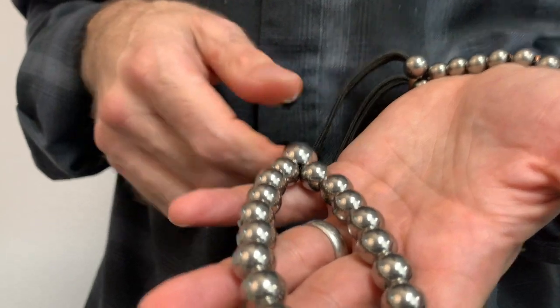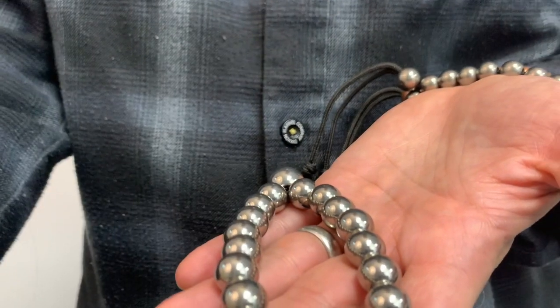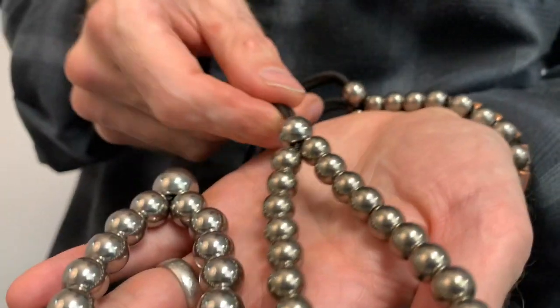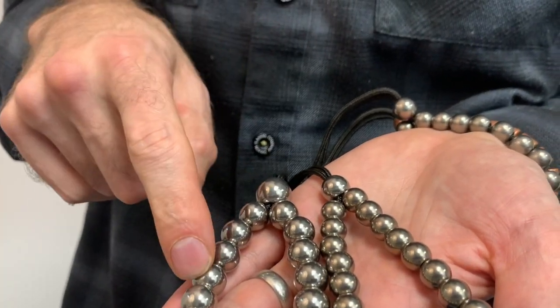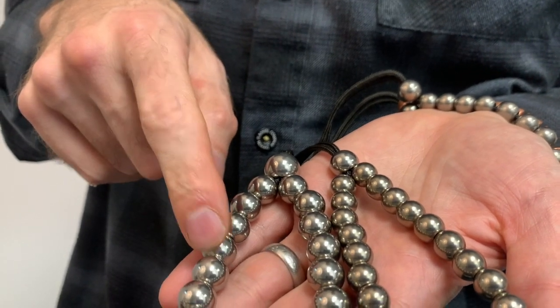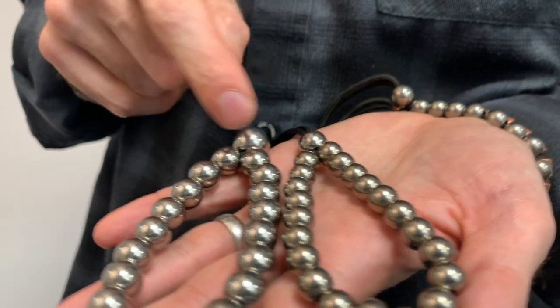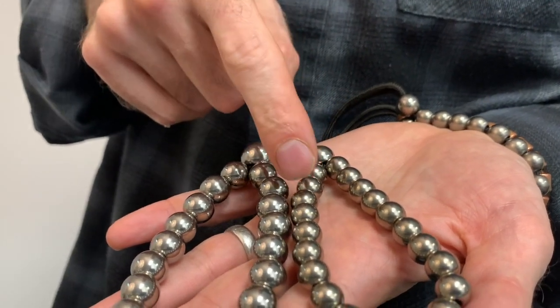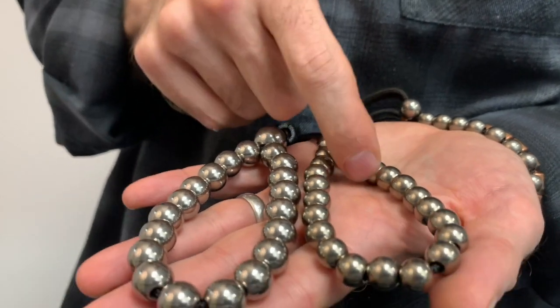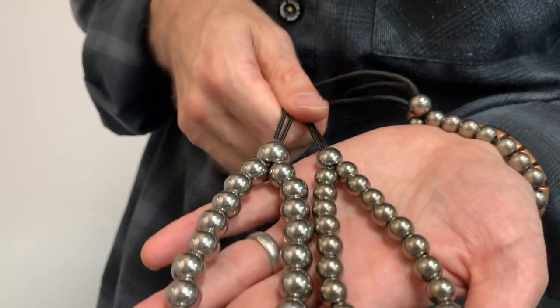In the meantime, I've also been pushing forward on a couple of new versions. The first one is a slightly downsized version. The originals were 11.8 millimeter beads with a 15 millimeter at the top, so almost 12 and 15. The new version is 10 millimeters and 11.8, so like 10 and 12-ish. It's sized down a little bit in profile and also the circumference is a little bit smaller.